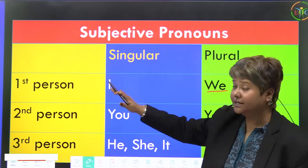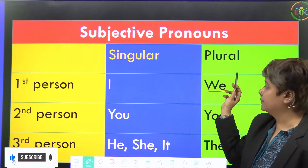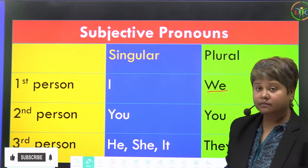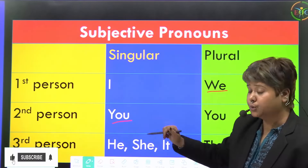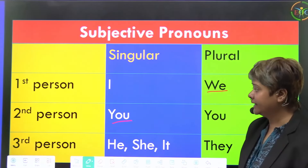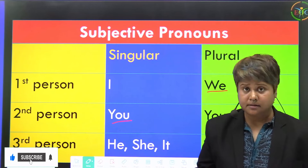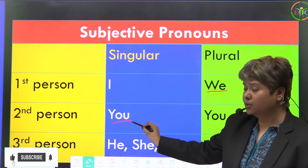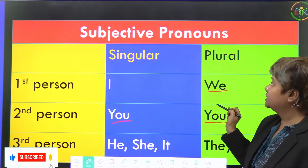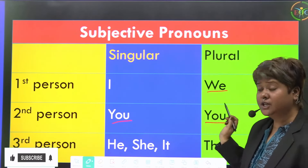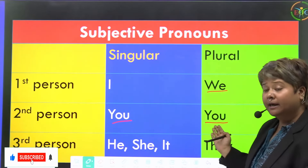For second person: 'You love to dance' — 'you' is singular. 'You guys can come to our place' — here 'you' is plural. So 'you' is used for both singular and plural in second person subjective pronoun.